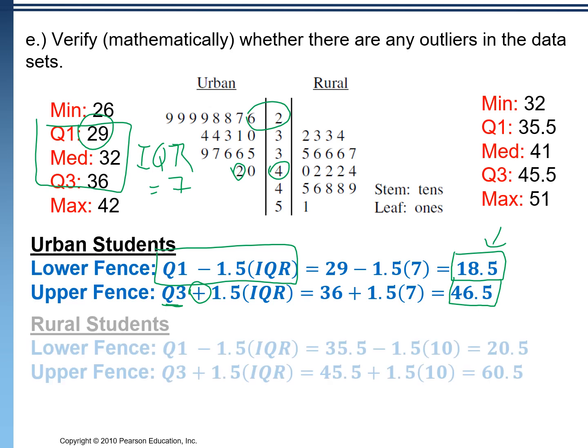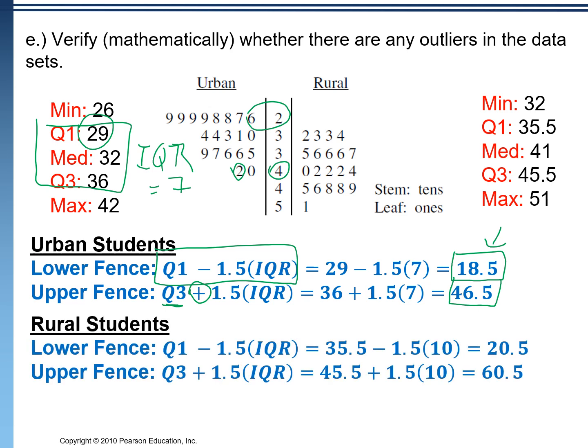We do the same thing with rural students. Anything below 20.5 or above 60.5 would be an outlier. Everything in our data set is between those two numbers, so there are no outliers in either data set.